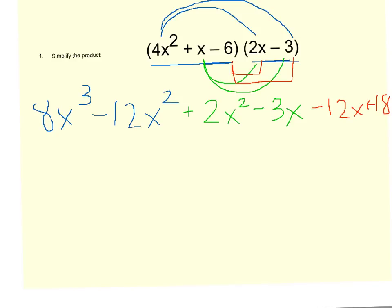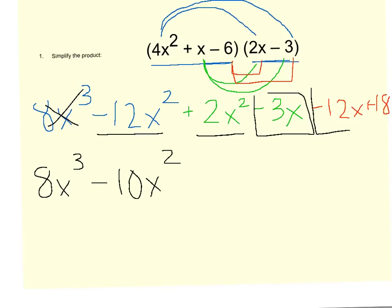Now the only thing I have to do to finish this is to combine like terms. I've got an 8x³, and nothing else is raised to the third, so that will stay as is. I've got a -12x², a positive 2x², to become a -10x². I've got a -3x and a -12x, which combine to be a -15x. And then lastly, I've got a plus 18 at the end.